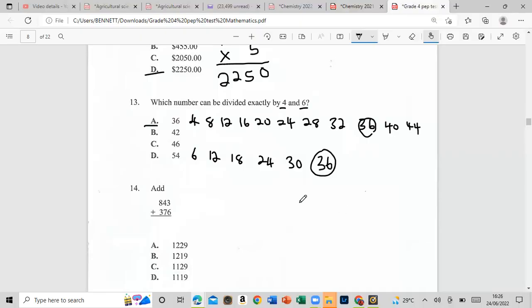Add 843 plus 446. That would be 1,289. So that would be B.